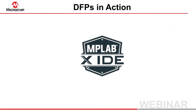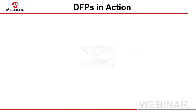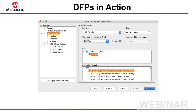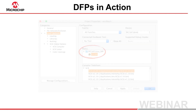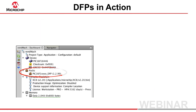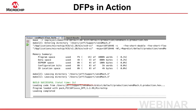When you create a project in the IDE, a DFP will be automatically selected. In the project properties dialog, you can see the selected pack. You can also see this information in the dashboard. And when you build a project, the pack and version number is printed in the output view after the build transcript.